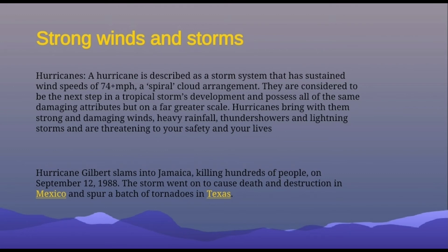Now let's talk about hurricanes. A hurricane is described as a storm system that has sustained wind speeds and a spiral cloud arrangement. It is considered the next step in a tropical storm's development and possesses all of the same damaging attributes but on a far greater scale. Hurricanes bring strong and damaging winds, heavy rainfall, thundershowers, and lightning storms, and are threatening to safety and lives. This is why it's considered a natural disaster. A hurricane has five categories — one through five.